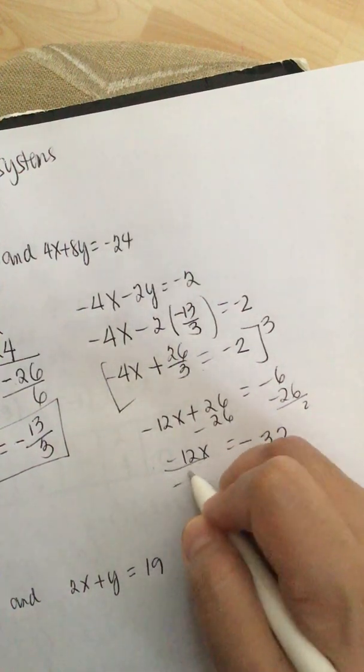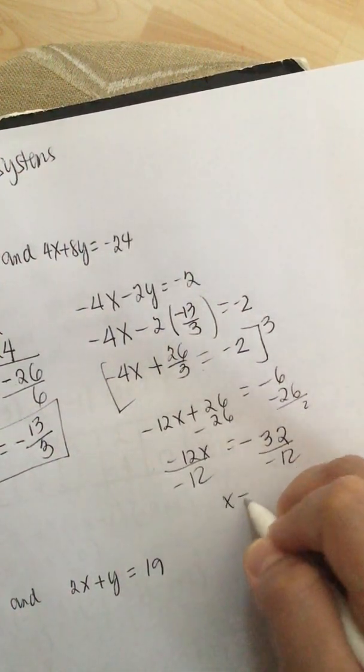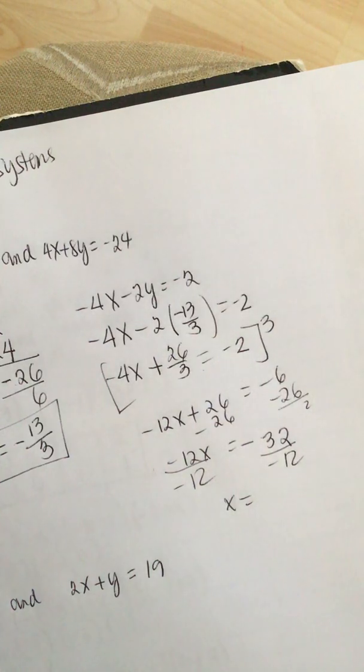So -12x is equal to -26 plus another -6 is equal to -32. And then we divide by 12. x is equal to -32 divided by 12.